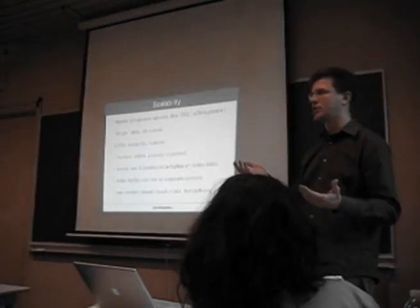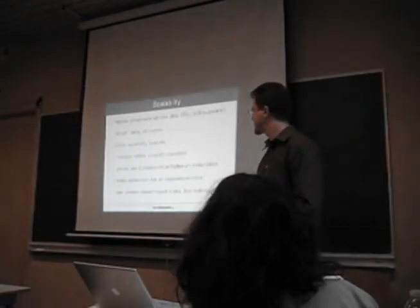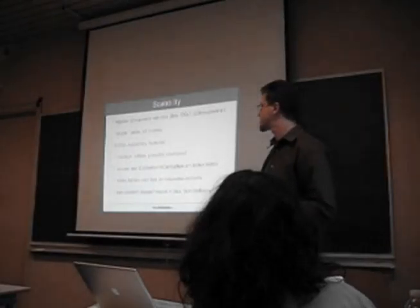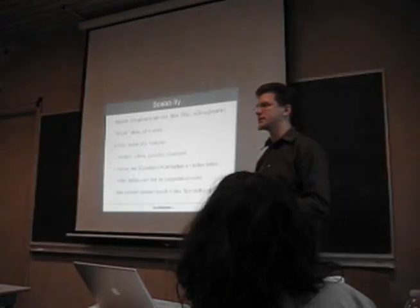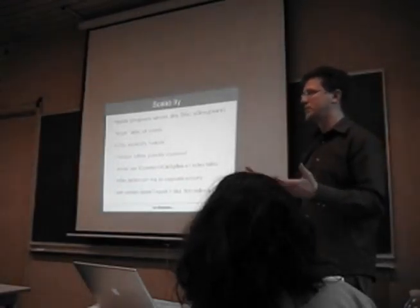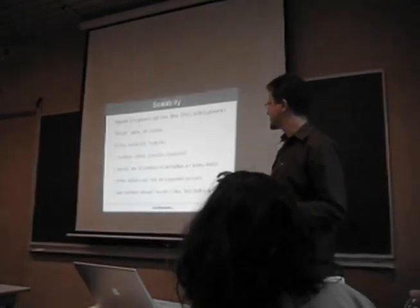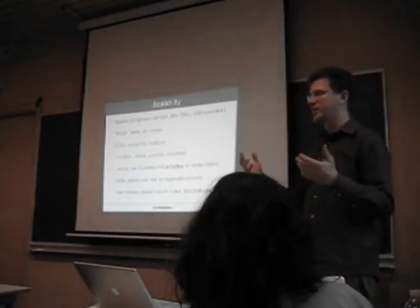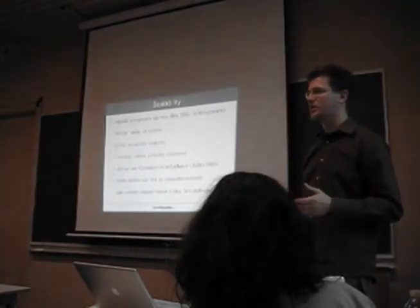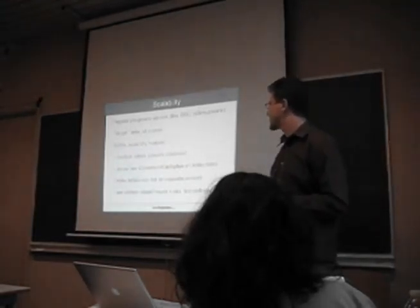The index tables can also be split and can live on different database servers than the content tables which store the payload. The content tables don't need to be on very fast storage — they could be on RAID 1, which ensures integrity because it's the important information. Whereas the index tables can be reconstructed from the content, so you can place them on volatile storage like a solid state disk. If it breaks, you can just rebuild the index from the content tables, allowing more aggressive optimization.